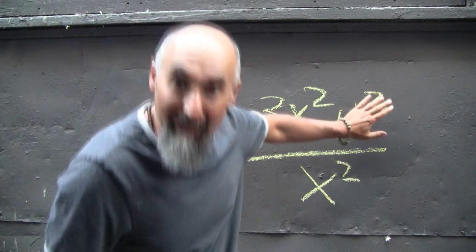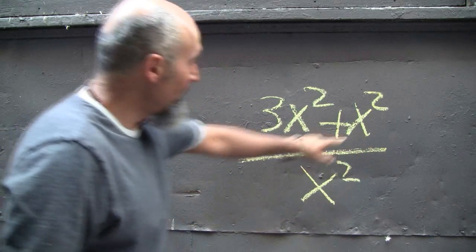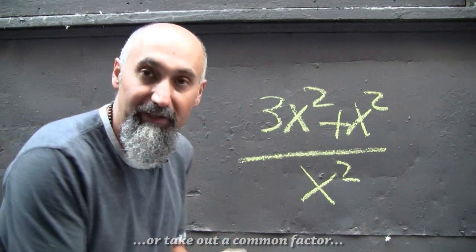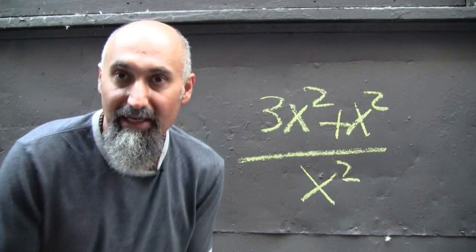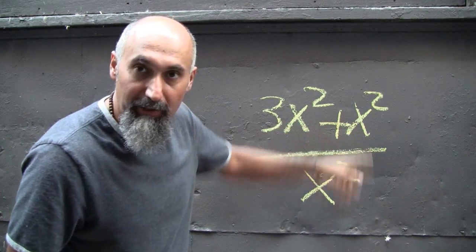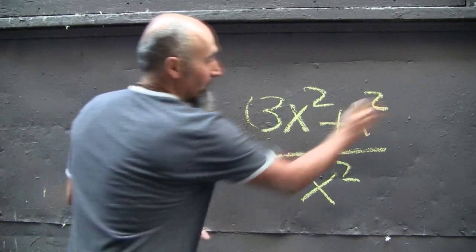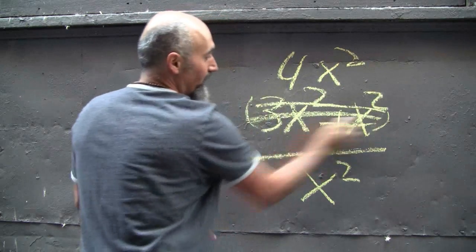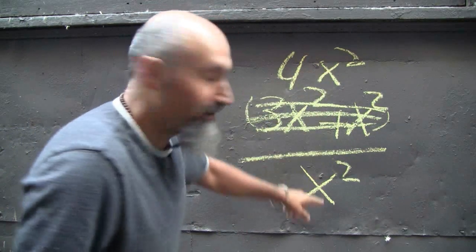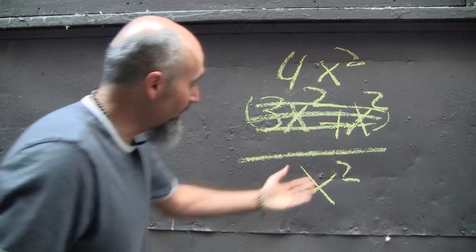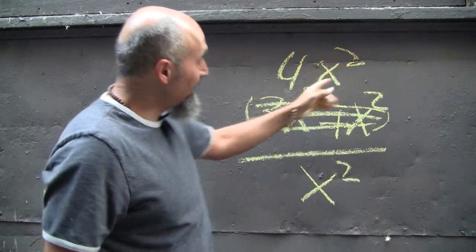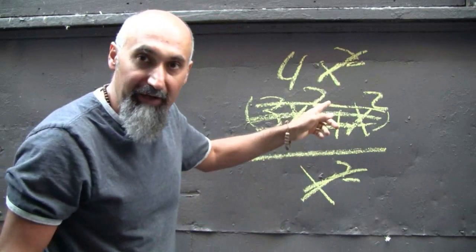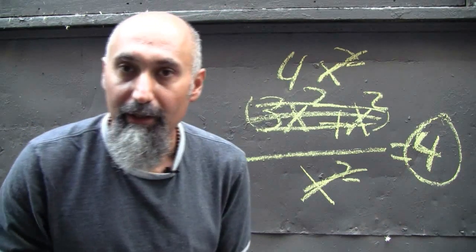So let's say you have (3x² + x²) divided by x². That x² on the bottom cannot cancel either x² in the numerator because there's a plus between them. The only way to simplify this is to get rid of that plus by combining like terms first. 3x² plus x² equals 4x², so now you have 4x² divided by x². Now you can cancel x² with x², and your final answer is 4.